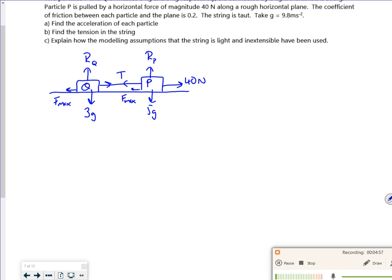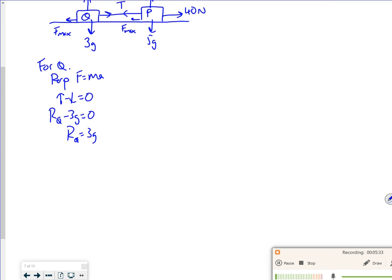Right then, okay. So very quickly then, let's work out the R values, then we can work out the friction, then we can work out the Fmaxes. Because each Fmax is different. Right, so let's have a look at Q. So, for Q. So if I go perpendicular, F equals ma. So I've got up minus down is 0. So RQ minus 3g is equal to 0. So R for Q is 3g.